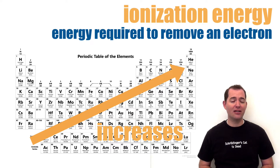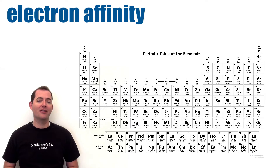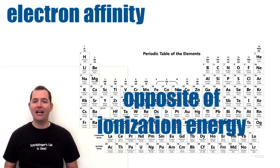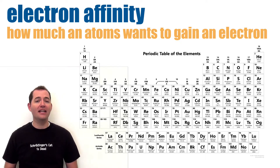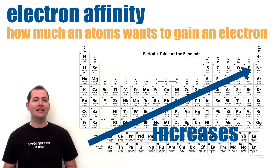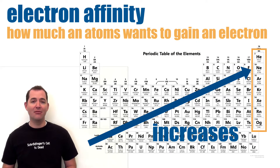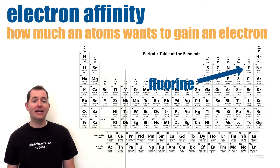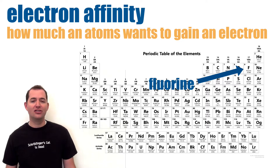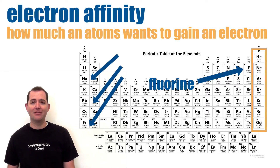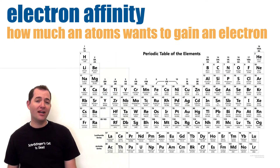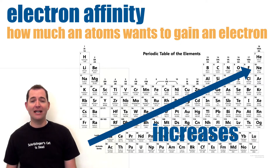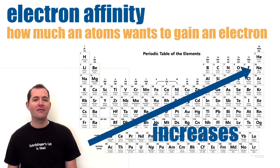Electron affinity is another important periodic trend and can be thought of as the opposite of ionization energy — it is how much an atom wants to gain an electron. Electron affinity increases as we move up and to the right on the periodic table. We can disregard noble gases here because their valence shells are full. Fluorine is a good example: it wants to gain one additional electron so its outer shell can be full, just like a noble gas. Elements on the opposite side have low electron affinity because they would rather lose electrons. There are some small variations, but the trend generally holds true.